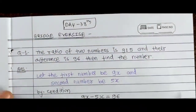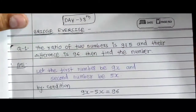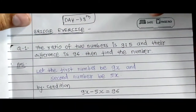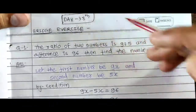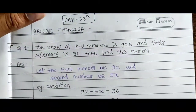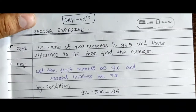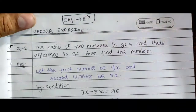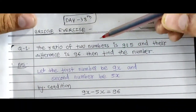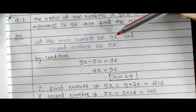Aaj ki is lecture mein hum dono dekhne wale hain. Now Day 38 — isko exercise leke chalte hain. First question: the ratio of two numbers is 9 is to 5 and their difference is 96, then find the numbers.